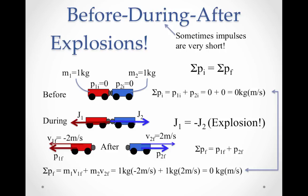Let's take a look at our first type of interaction that happens abruptly — an explosion. We're going to have an explosion between two carts; they push off of each other because of two springs that are released. We'll use conservation of momentum to analyze this interaction. Since the carts are at rest before the explosion, there's no velocity and therefore no momenta — the initial momentum of the system is zero.